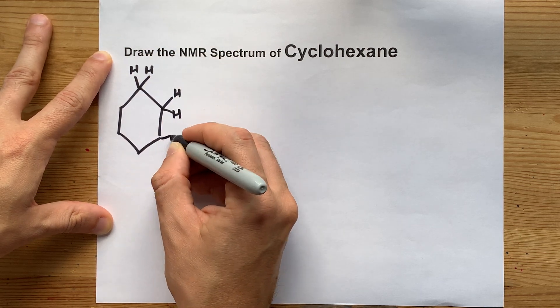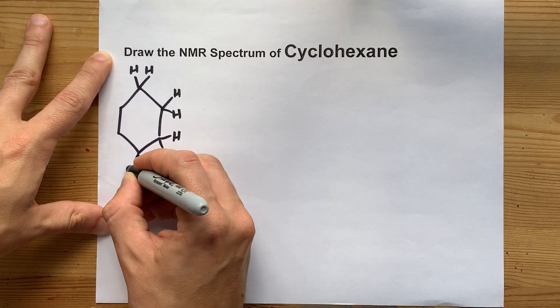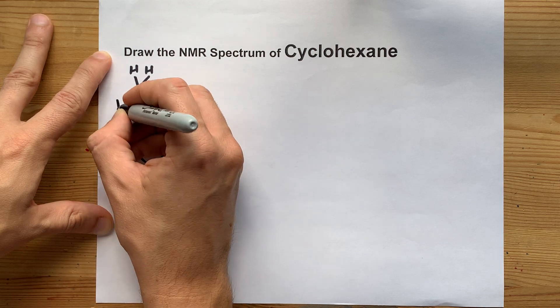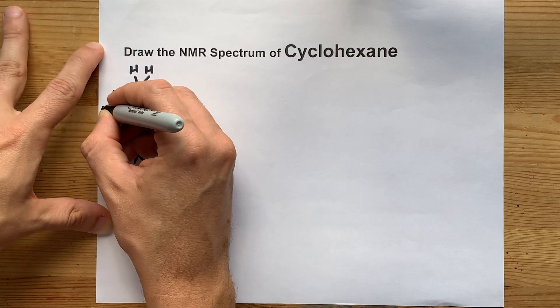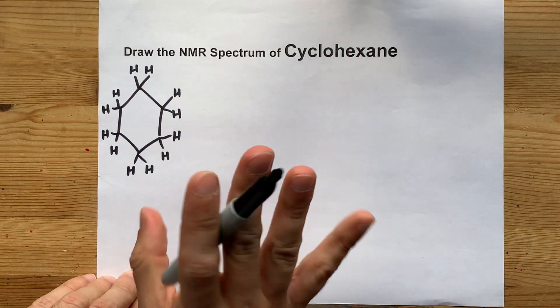So I'm going to draw you cyclohexane, and we'll take a look at all of the hydrogens. Now you probably realize cyclohexane is a very symmetrical molecule, and at room temperature it turns out that all of these hydrogens are equivalent.